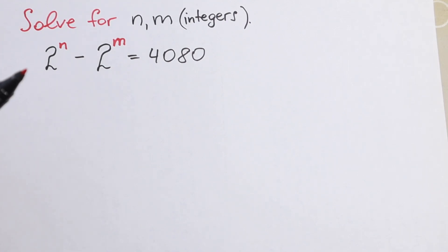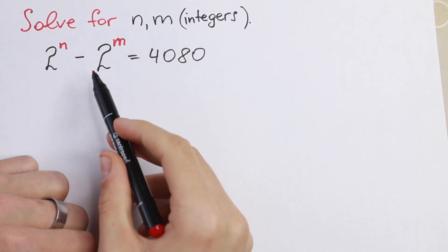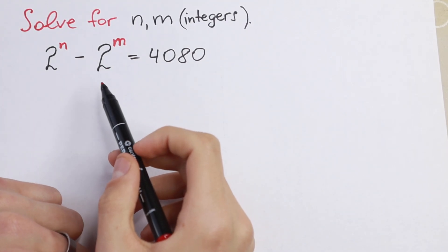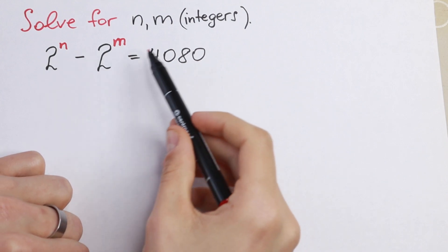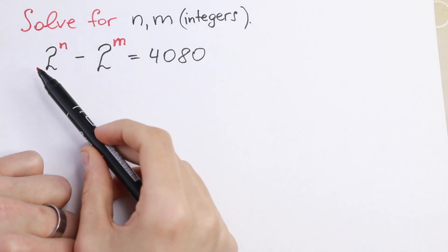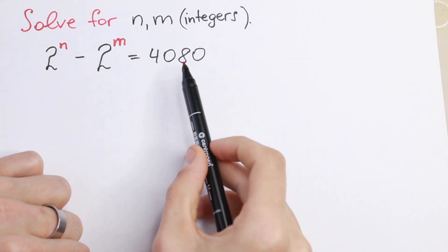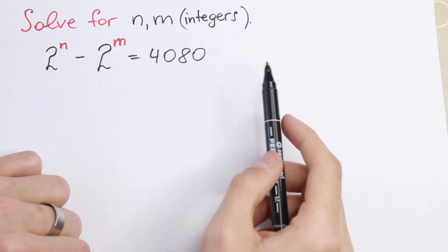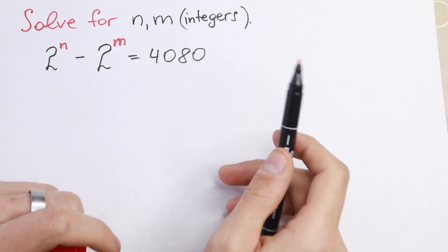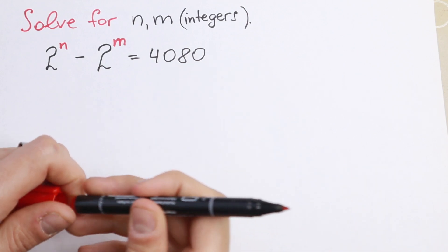Hello everyone, welcome back to High Mathematics. Today we have an interesting Olympiad algebra problem. We need to solve this for n and m as integers. We have 2 to the power n minus 2 to the power m equal to 4080. How can you solve it?